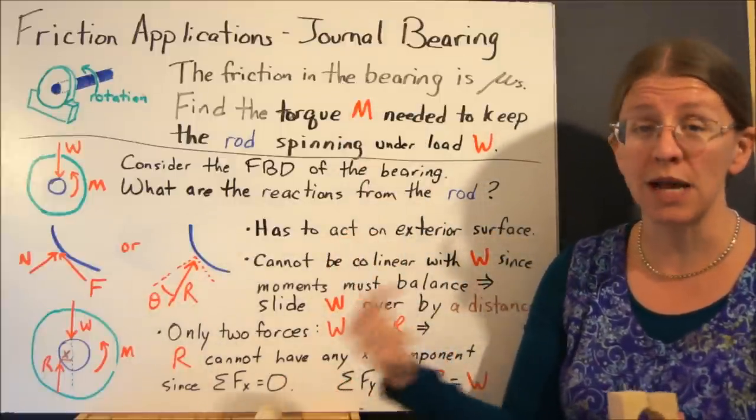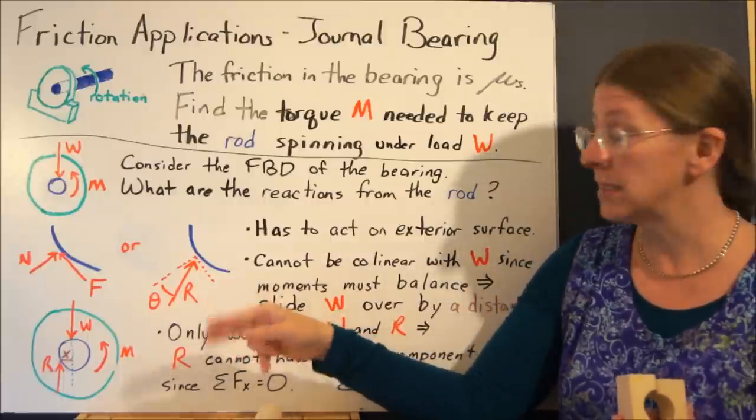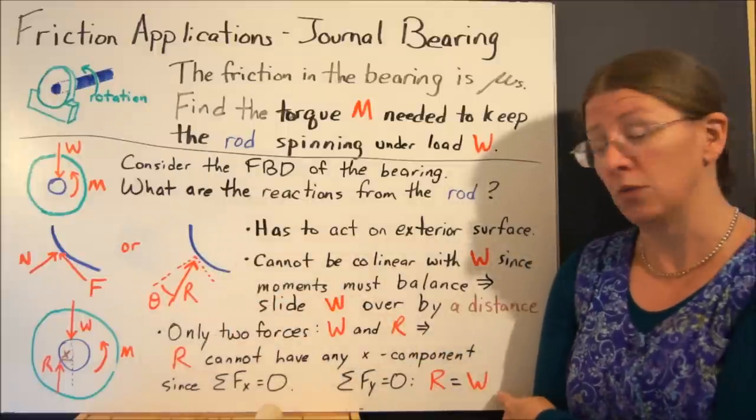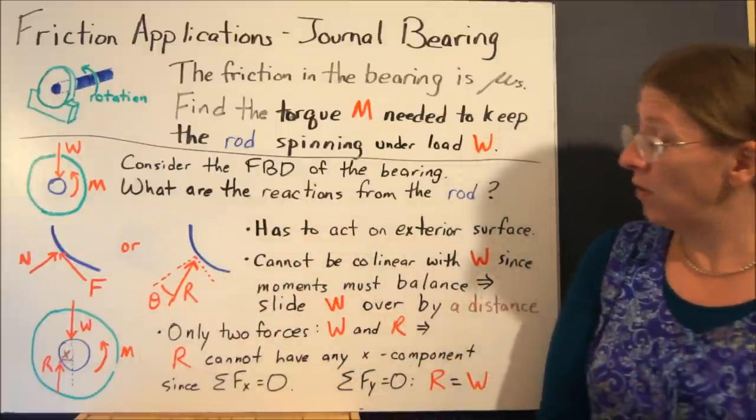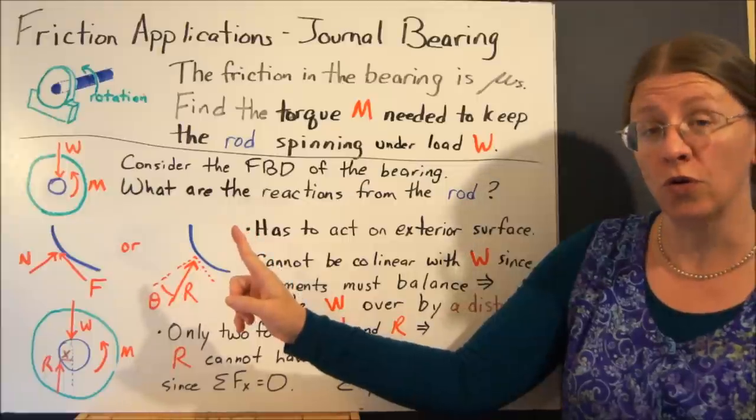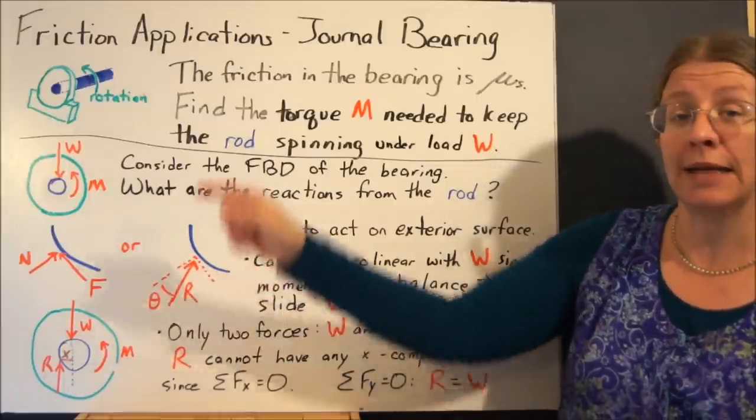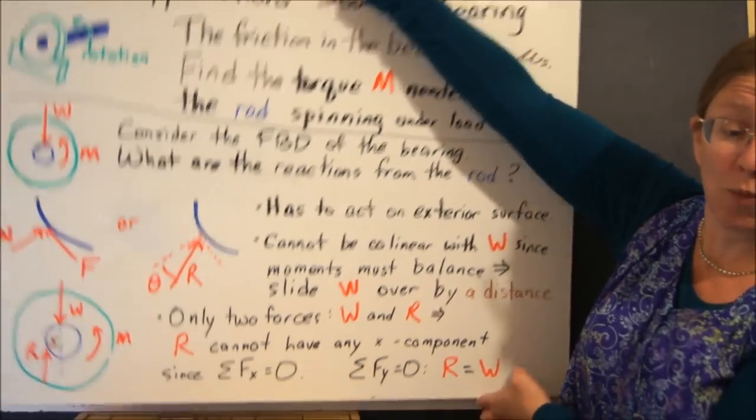The sum of the forces in X tells you that R does not have an X component. The sum of the forces in Y tells you that R equals W. So I know that R is actually going to be vertical, and that it's going to be acting at a distance. But what is that distance, and what do I call it?